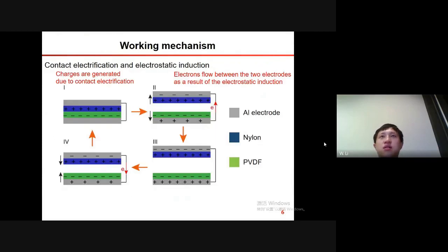The working mechanism is based on the contact electrification and electrostatic induction effect. When the two triboelectric materials in this device, nylon and PVDF, contact with each other, positive and negative charges are generated on the surfaces, respectively, as a result of the contact electrification. And when the two triboelectric layers begin to separate, electrons will flow from the bottom electrode to the top electrode, driven by the electric potential difference between the two electrodes as a result of the electrostatic induction effect. And then, when they are contacting again, the electrons will flow back. And this is how the electricity is generated and the energy is harvested by the NF-TENG.